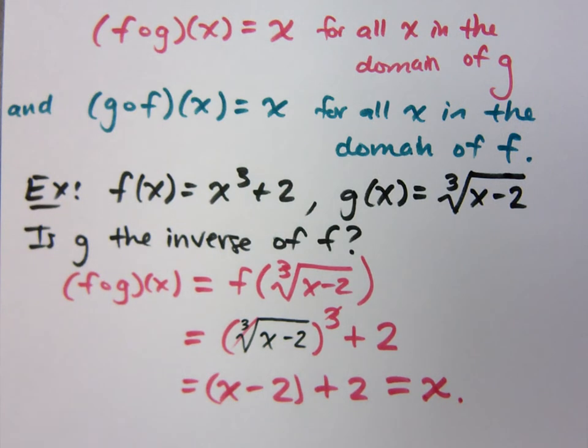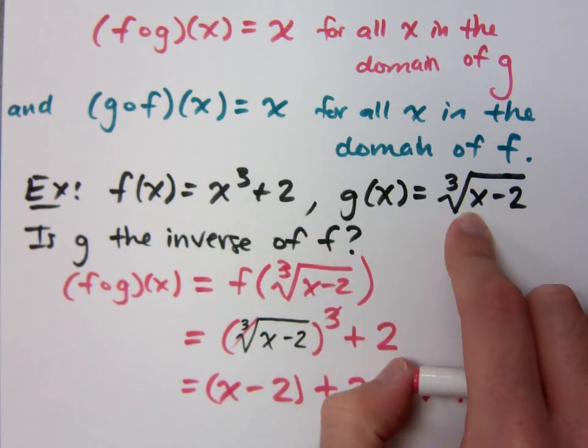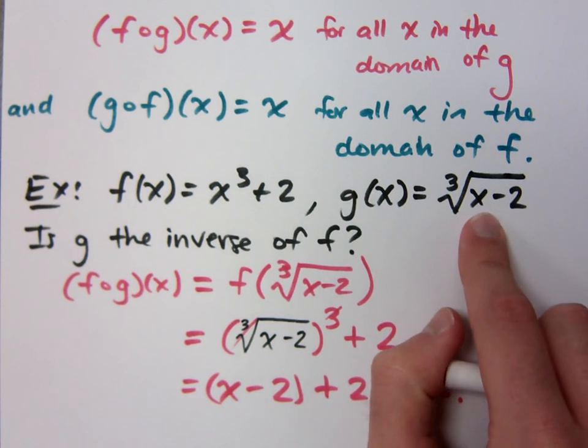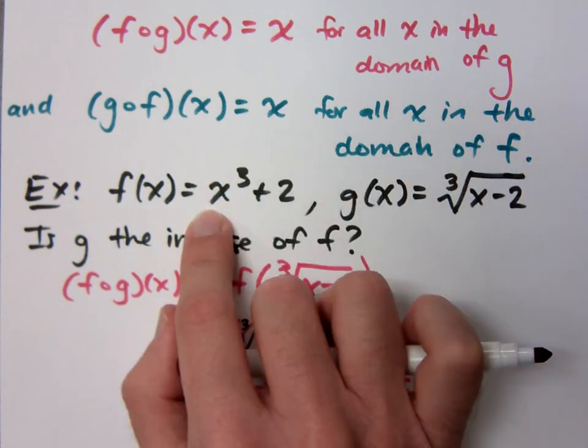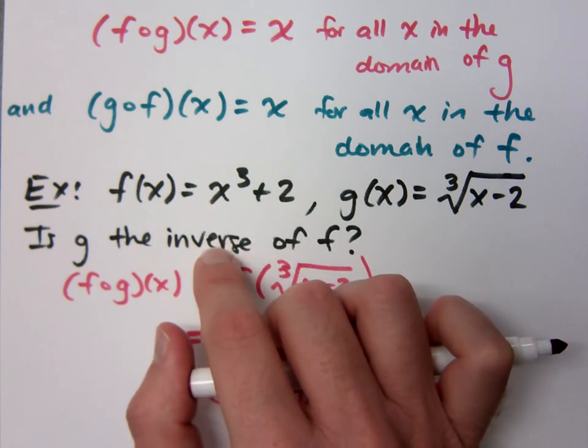Because think about the composition stuff you had on your test. If I said, what is f of g of 10? That means I'd have to plug 10 into g. What happens if I plug 10 into g? What do you get? 10 minus 2, the cube root of 8 is 2. And then you would take 2 and plug it where? Here. If I plug in 2 into f, what do you get? You get 10. So you started with 10, you screwed around with it, and then you screwed around with it again, and you get back to 10.